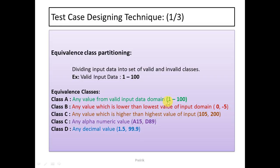In Class B, we pick a value lower than the lowest value of the valid input domain. The lowest valid value is 1, so you can pick 0, minus 1, minus 2, minus 3, etc. — every data in that class gives the same result. Then Class C contains values higher than the highest value of the valid input domain, which is 100, so you can pick values higher than 100.